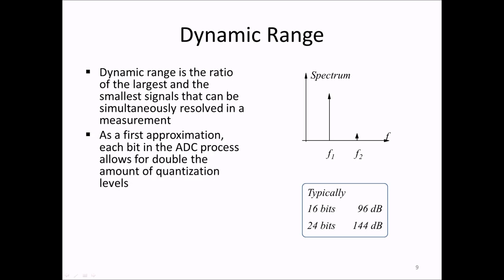The actual dynamic range can be modeled in detail by something called quantization noise, which we will not do here. And this is because, with today's instruments, for any practical purpose, it's enough to consider that each bit in the ADC allows for a doubling of the number of quantization levels. Since a doubling in amplitude corresponds to 6 dB, this means that the dynamic range due to quantization is approximately the number of bits multiplied by 6 dB.